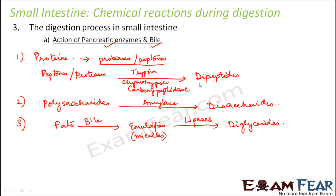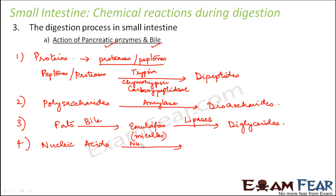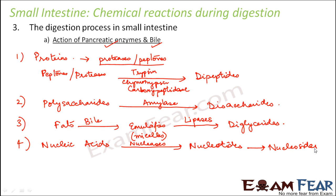These are all quite simple when compared to the initial complex structures. The last one would be the nucleic acids. Nucleic acids are also acted upon by enzymes called nucleases, and they are converted into nucleotides, which further get converted into nucleosides by the action of nucleases.